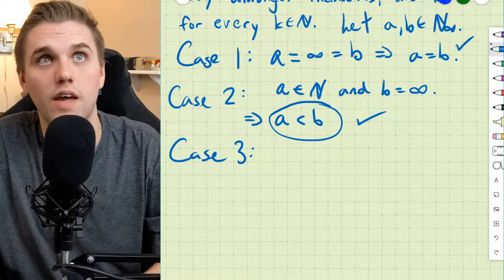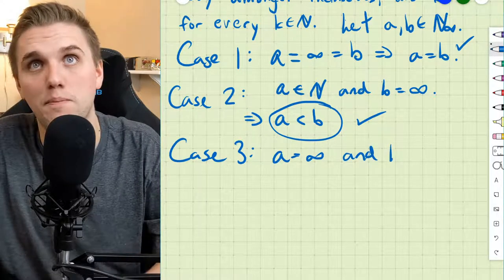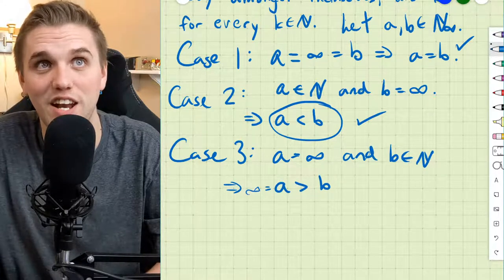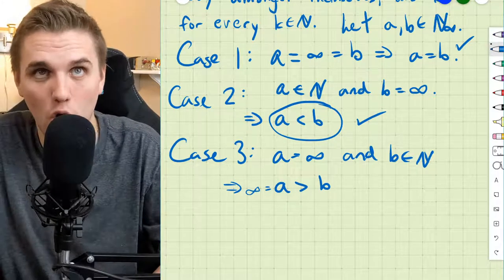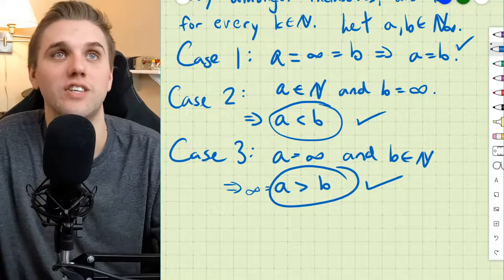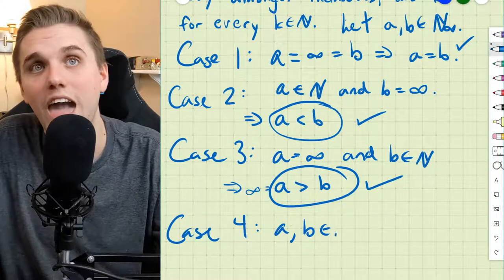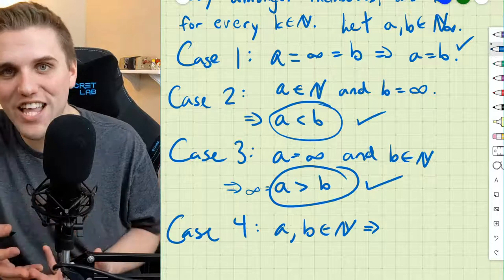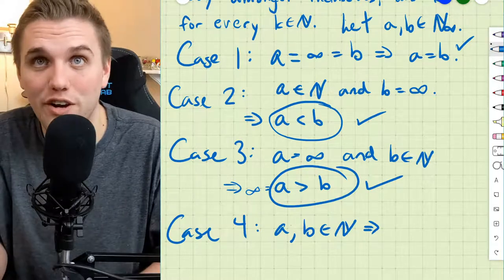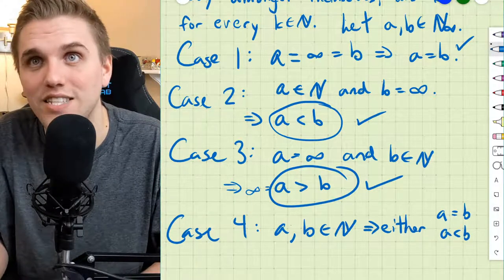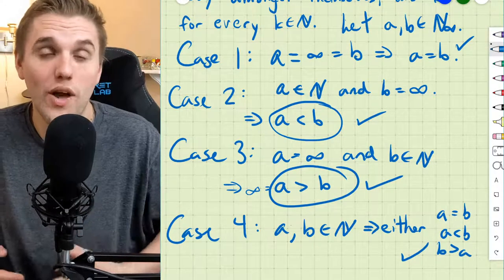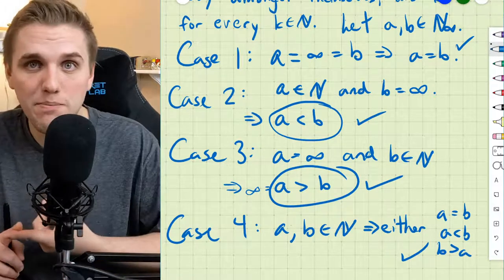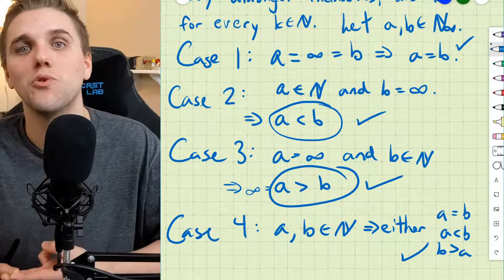Case three: A equals infinity and B is a natural number. Then A is greater than B, since A is infinity and infinity is larger than every natural number by definition — exactly one result. Case four: A and B are both natural numbers. Since the natural numbers are totally ordered in the traditional sense, exactly one of A equals B, A less than B, or B less than A holds. In all four cases, exactly one comparison is true.